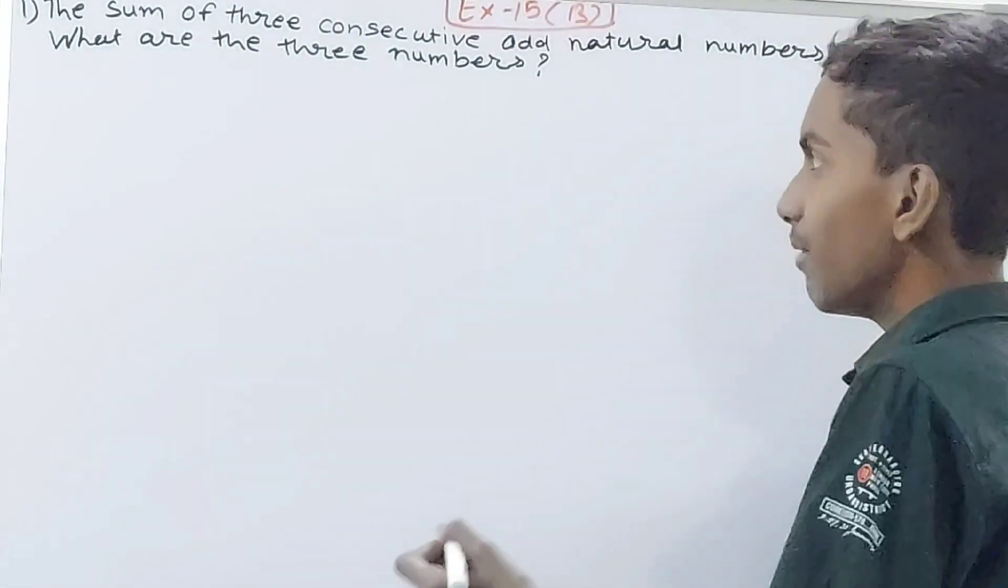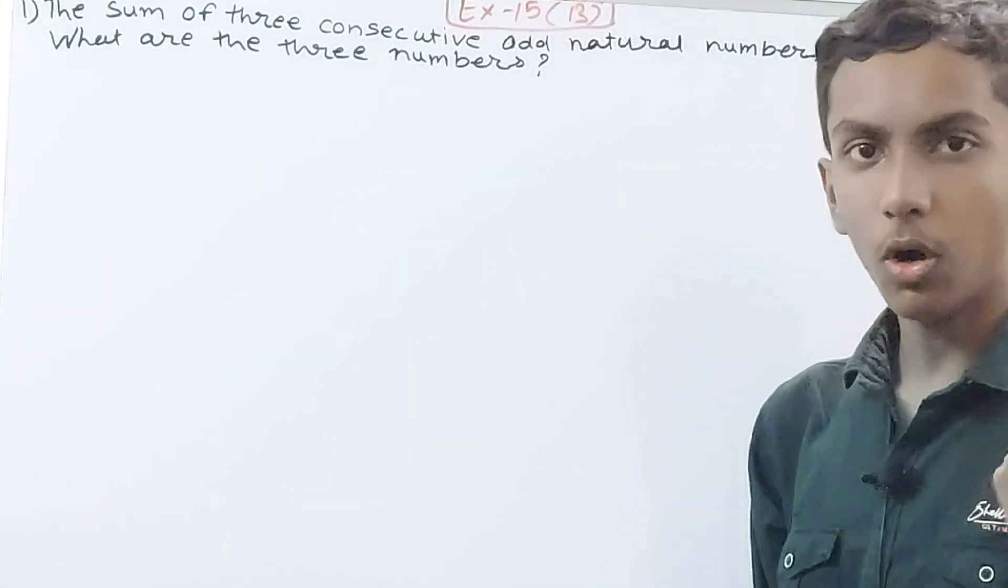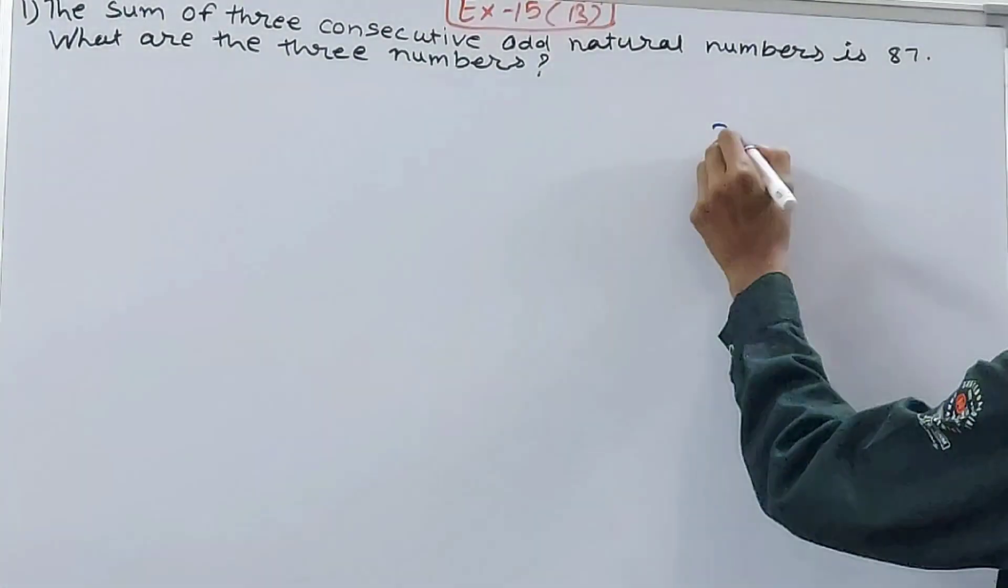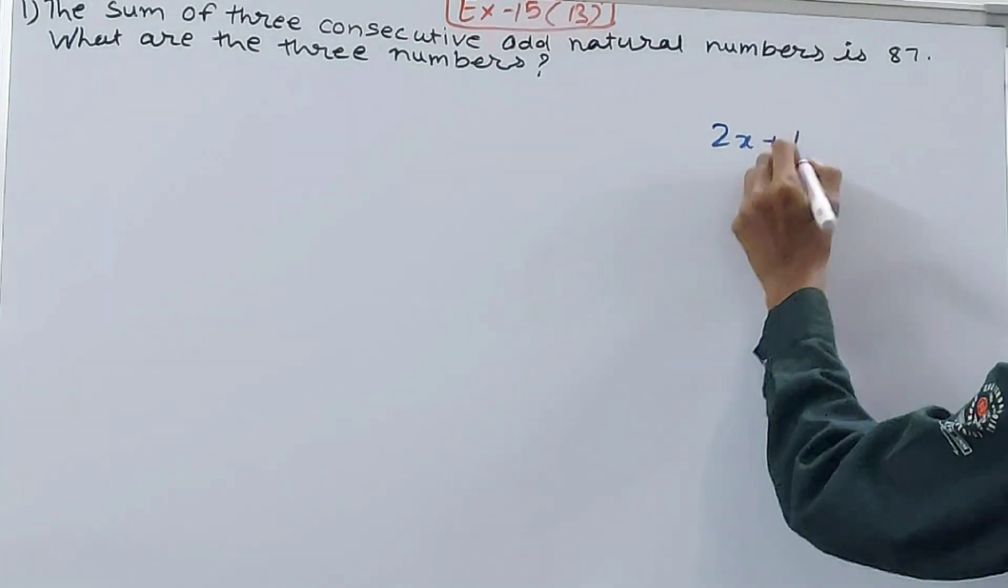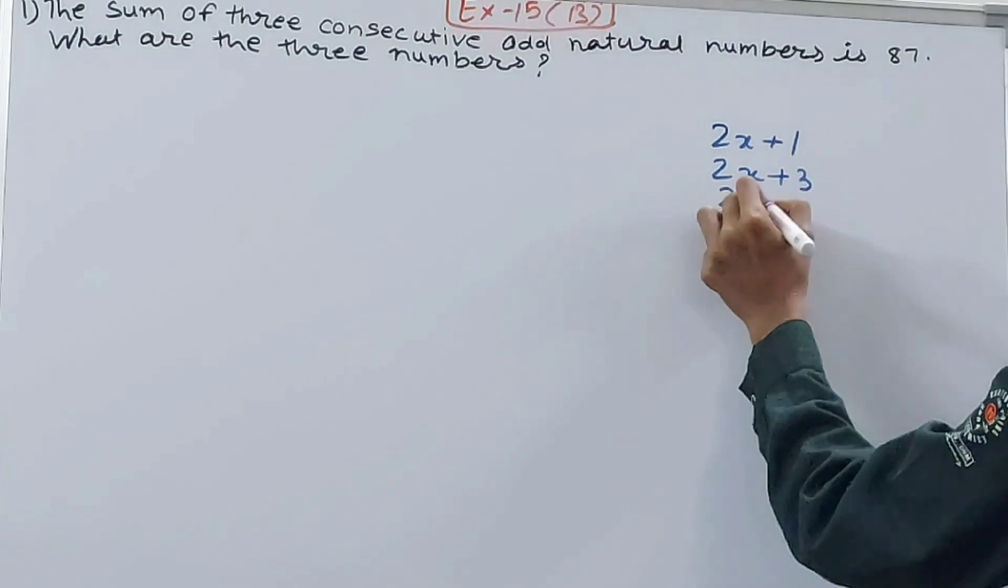So whenever these types of questions come with odd numbers, you will always assume your odd numbers to be like this: first number 2x+1, second number 2x+3, third number 2x+5, and so on.